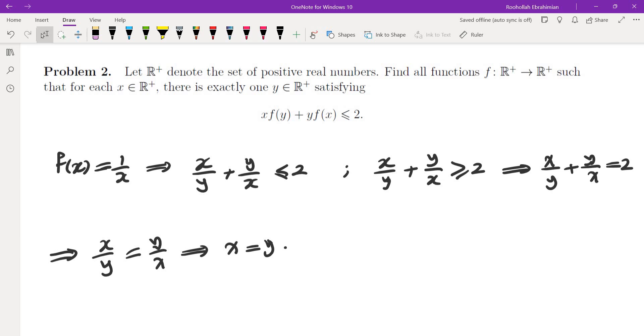So it's likely the case that 1 over x is in fact the only function satisfying this property. But how do we prove that if it were to be true?